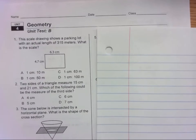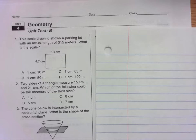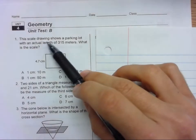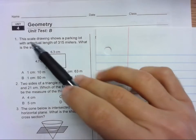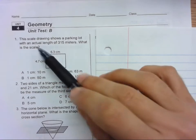Let's look at the Unit 4 Study Guide Problems, Problem 1. The scale drawing shows a parking lot with an actual length of 315 meters. What is the scale?